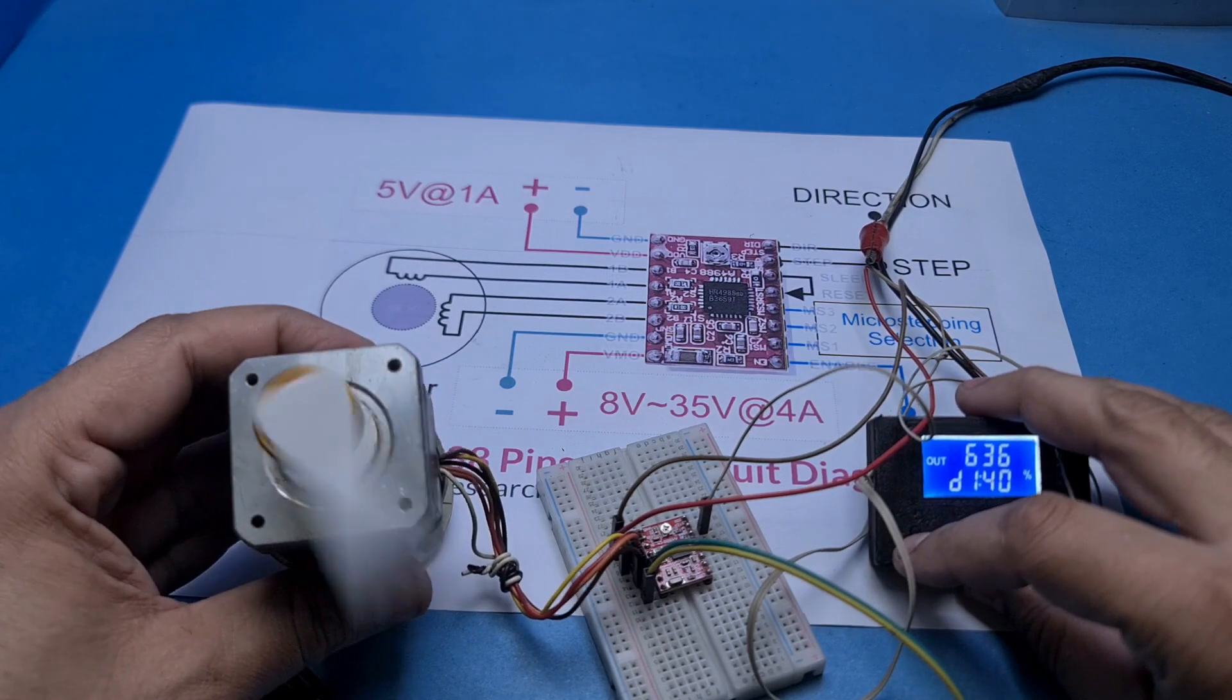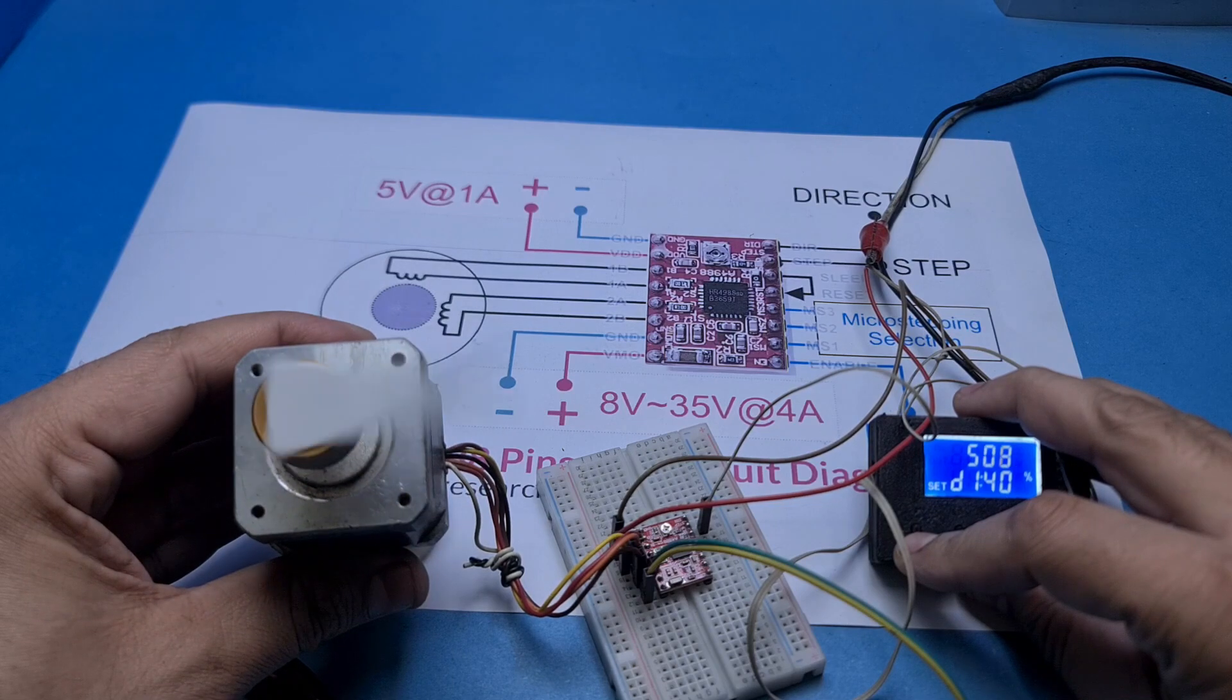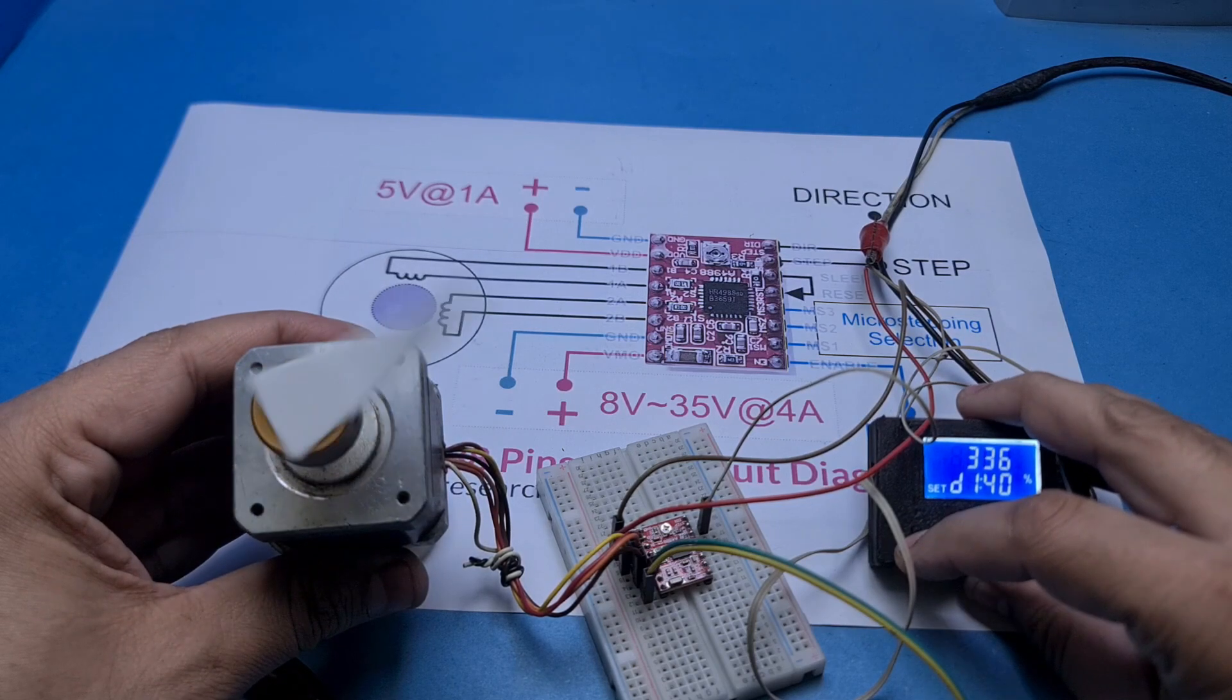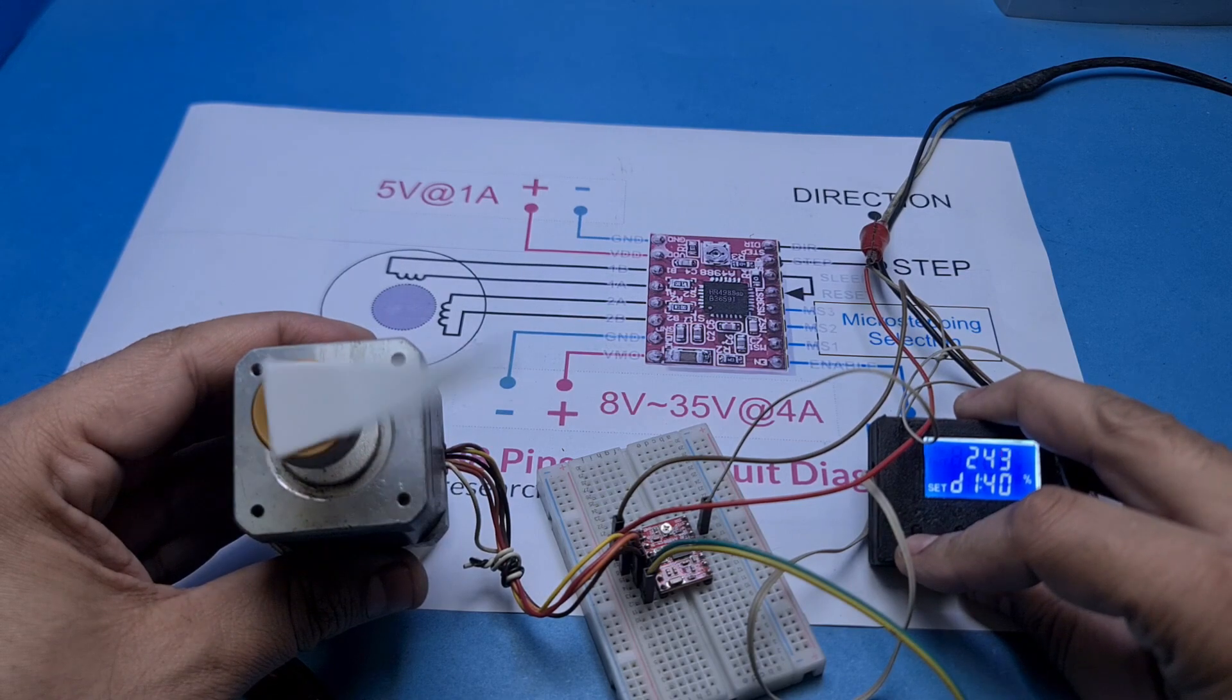So as you can see, the A4988 is perfectly driving this type of motor. Now let's see how to change the direction of the motor.